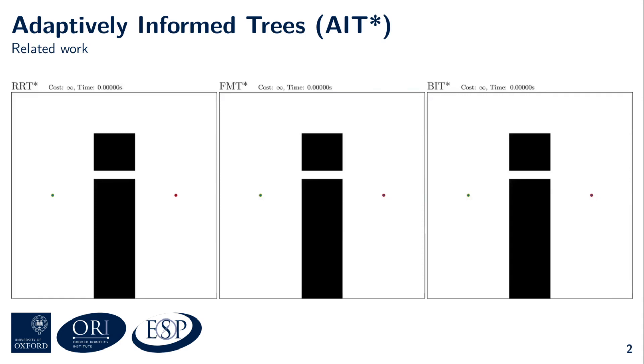RRT* and BIT* are anytime algorithms. They will stop as soon as they find an equal or better solution as the solution that will be found by this instance of FMT*, which is not an anytime algorithm and will run with a fixed number of 750 samples. Each state-space boundary will turn green once the associated planner has found a sufficiently good solution.